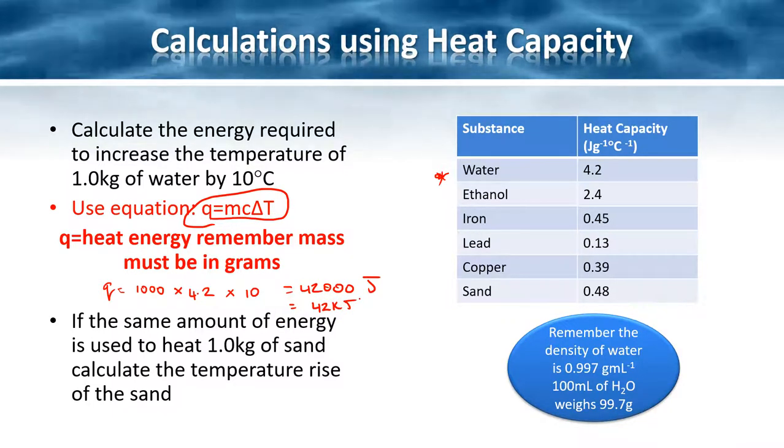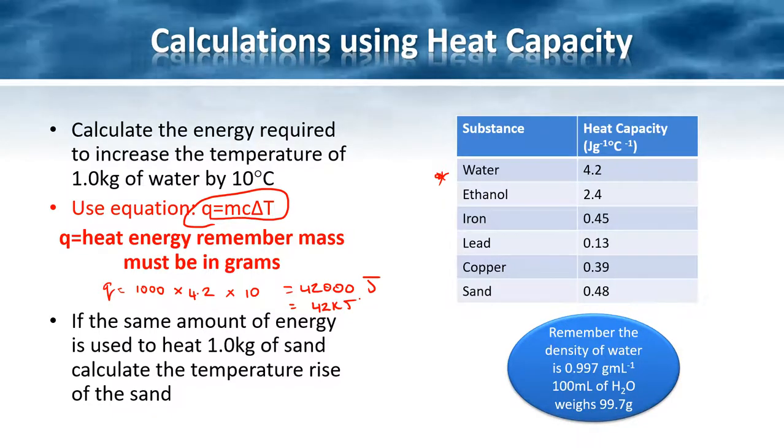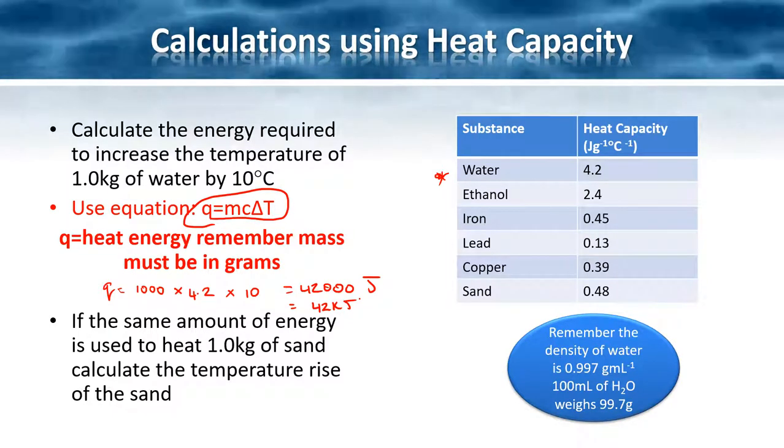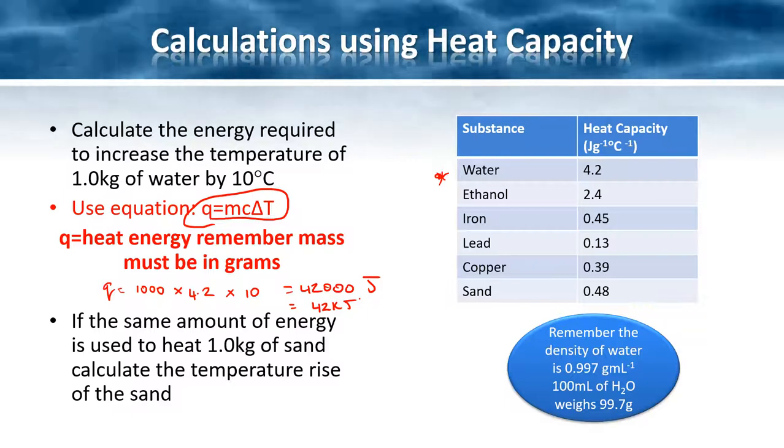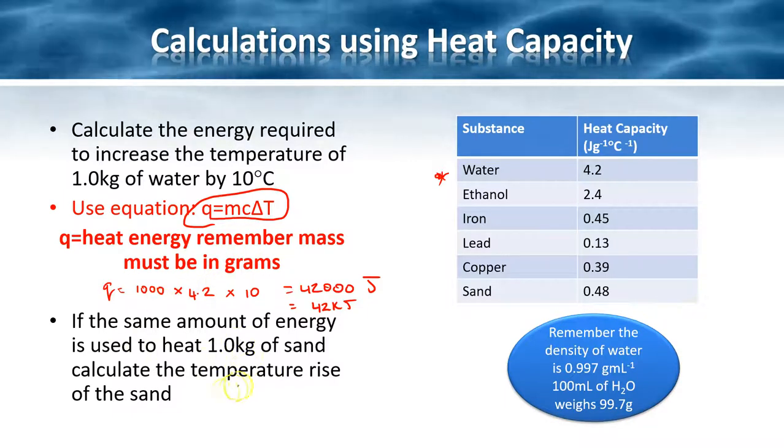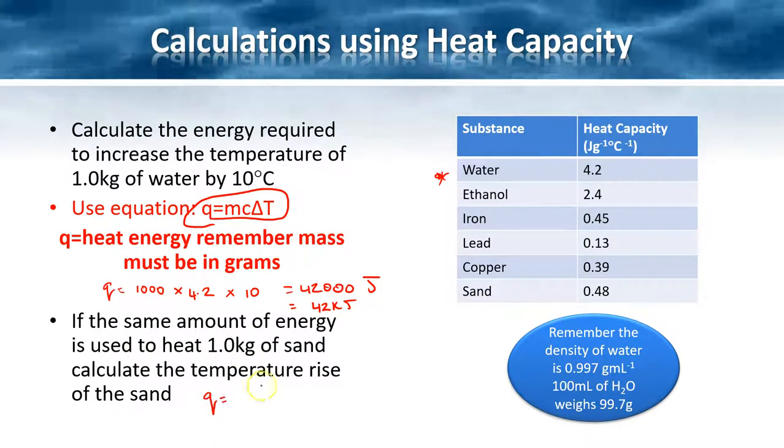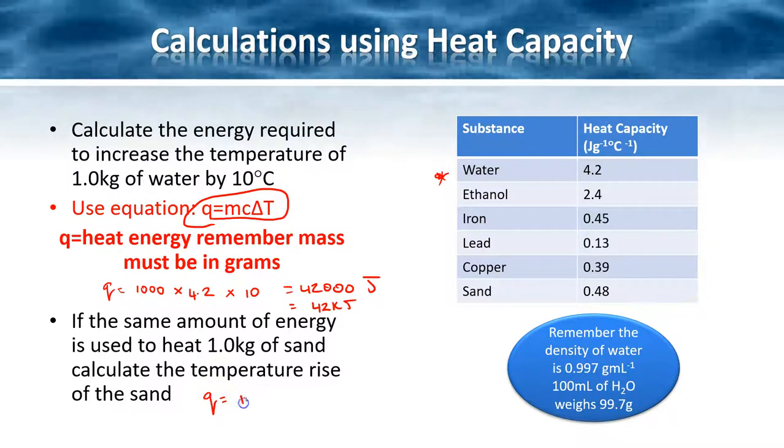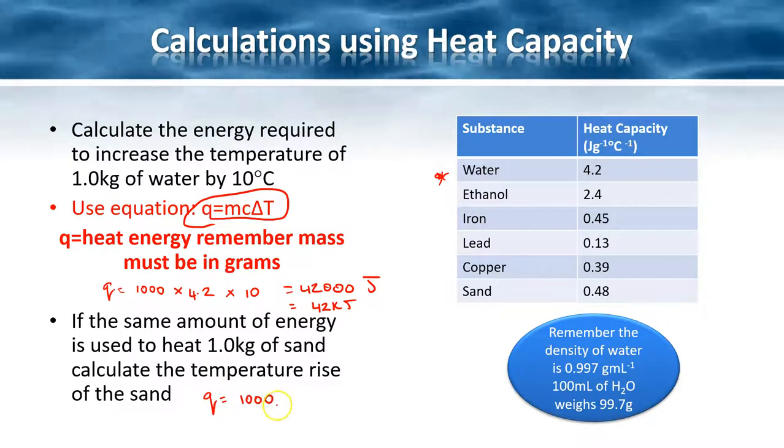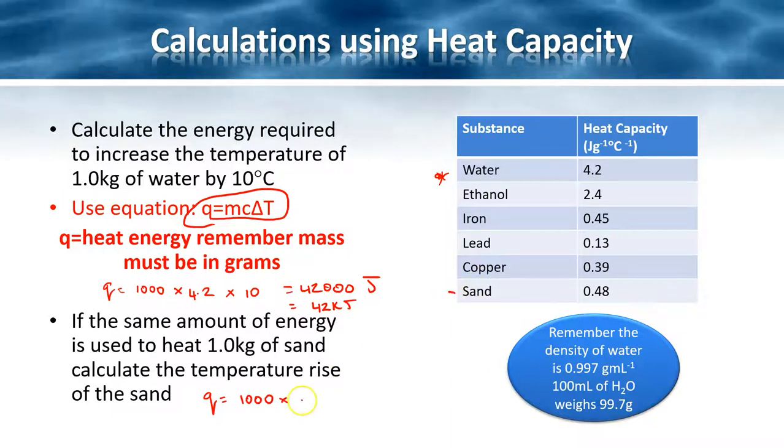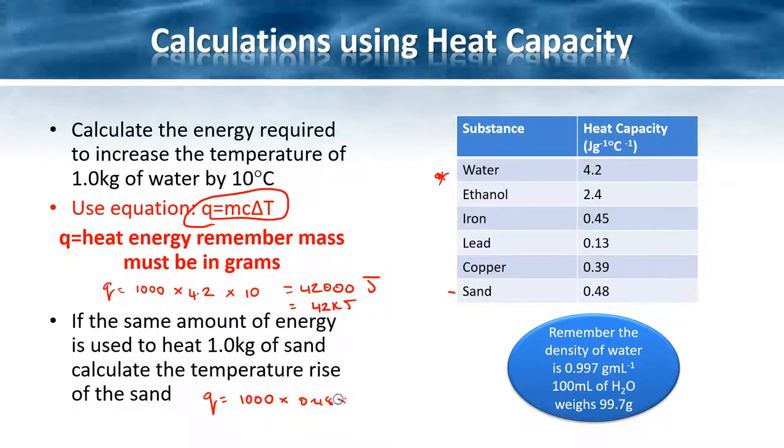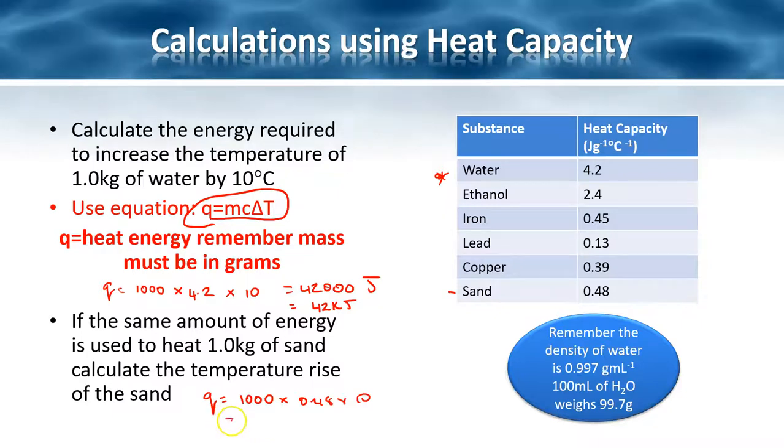It will take 42 kilojoules of energy to increase just one kilo of water by 10 degrees. If we look at the same thing for sand, this time we're going to look at the energy required for one kilogram, so 1000 grams of sand, and this is going to be 0.48 by the same temperature change.